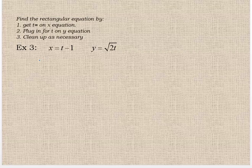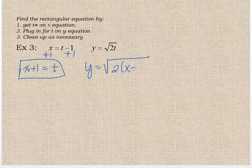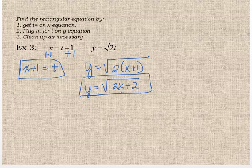Alright, let's try another one. Start with the x equation, solve it for t. So I'm going to add 1 to both sides. So I have x plus 1 equals t. Easy enough. Then I'm going to plug that into my y equations. Square root of 2 times x plus 1. Clean it up. 2x plus 2. There's really nothing more you can do to clean that up. So that's your y equation. That's your rectangular equation.